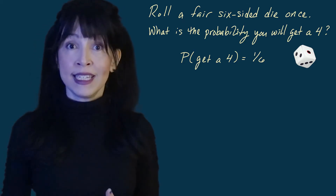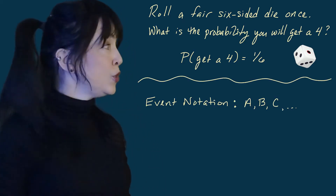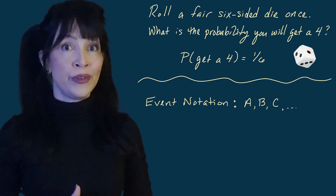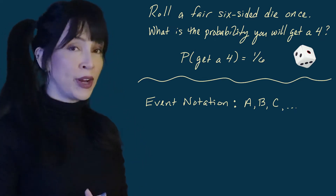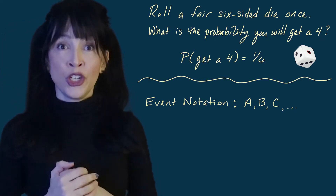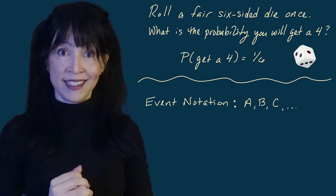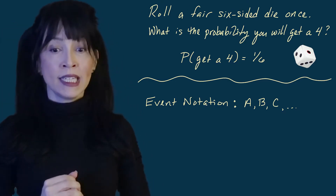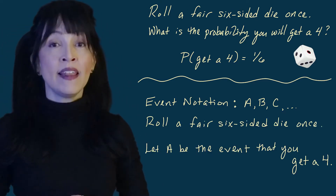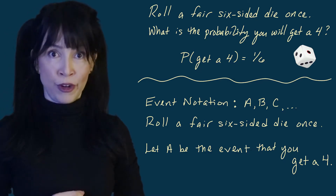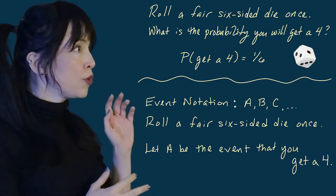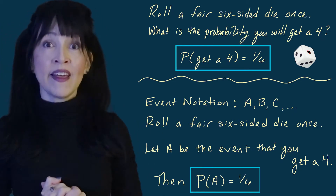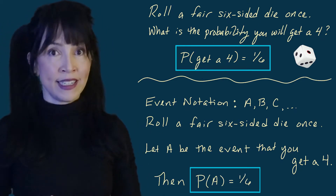Now let's try to generalize this notation. We're going to use capital Roman letters A, B, C — you can use any letters you want, but usually they're capital to denote sets or events. So if you roll a fair six-sided die once and you let A be the event that you get a four, then I can write more compactly that the probability the event A happens is one sixth.